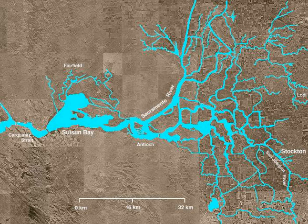Nearby cities include Lodi and Stockton to the east, Tracy and Manteca to the south, Brentwood to the southwest, and Pittsburg and Antioch to the west. The state capital, Sacramento, is located just to the north of the delta. The Sacramento River deep water ship channel connects the delta to the port of Sacramento, with its terminus located near Rio Vista, on the northwestern side of the delta.